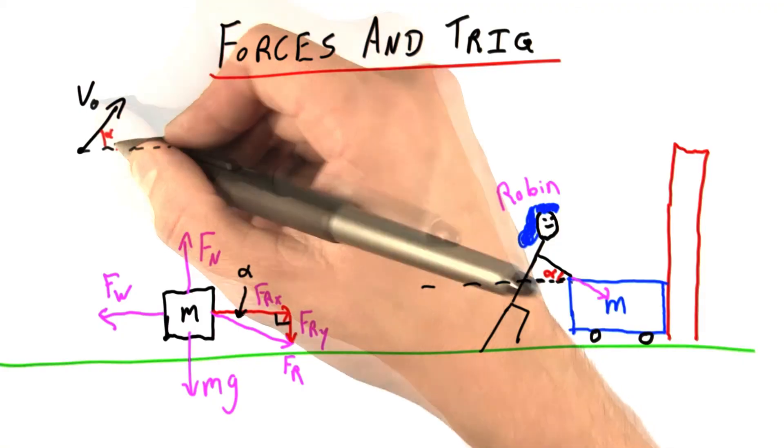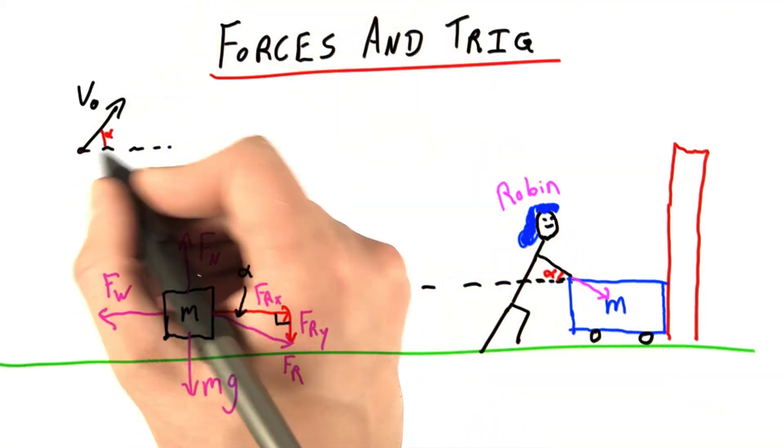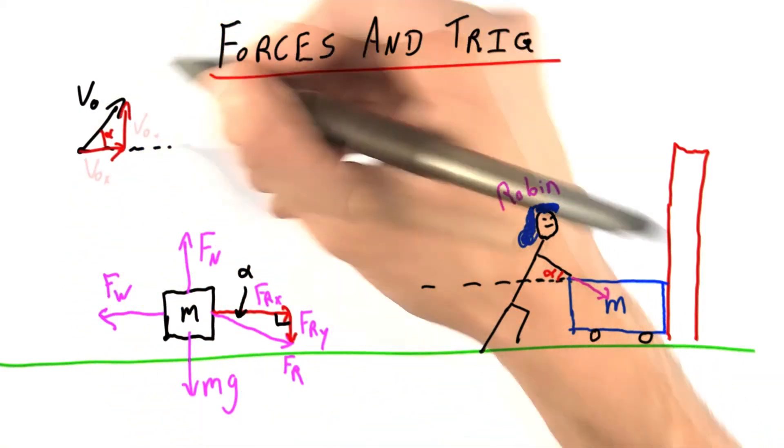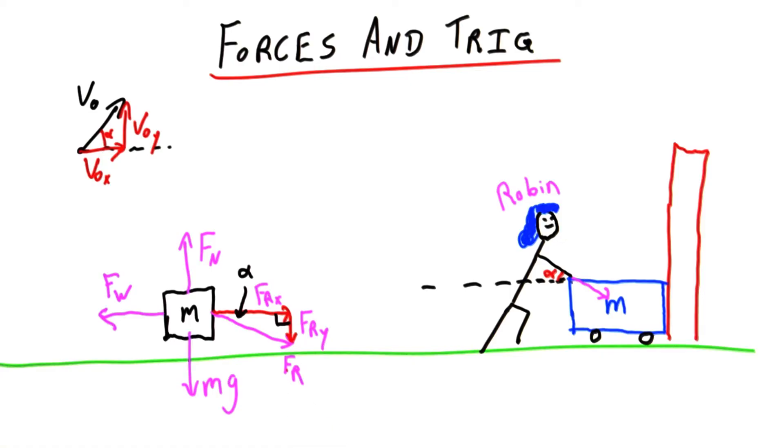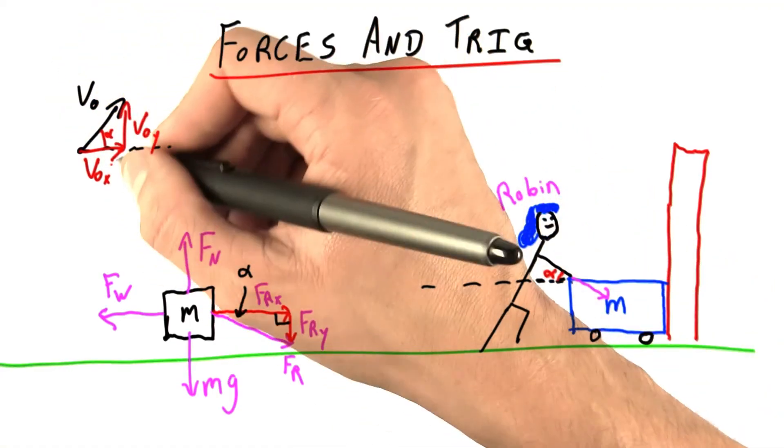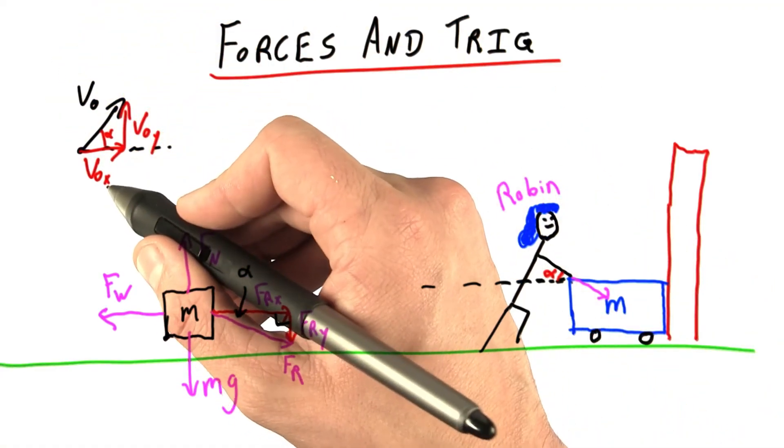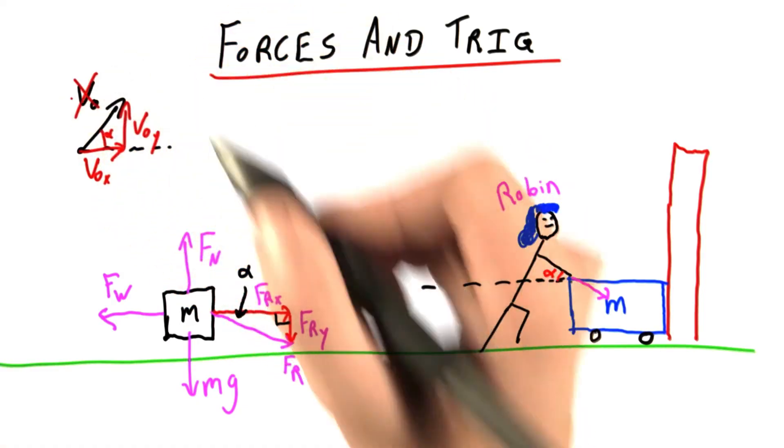When we had some initial velocity, and it was at some angle alpha, we broke that velocity into x and y components. Here we're doing the exact same thing, but with forces. And just like with velocity, once we had expressed it in terms of components, x and y, we didn't care about this guy anymore.